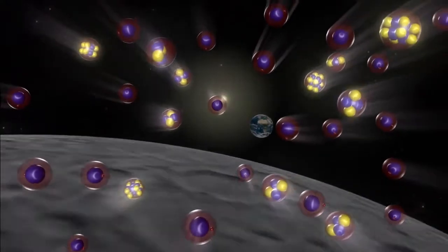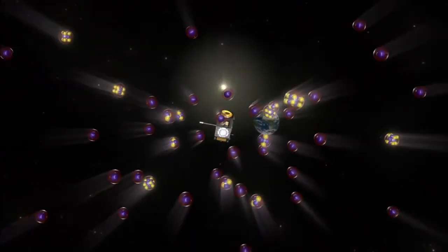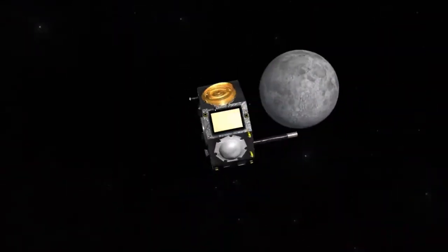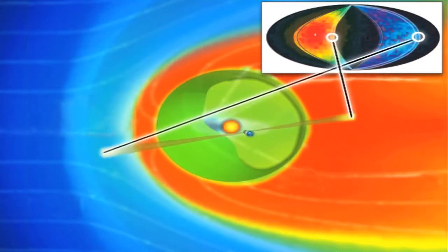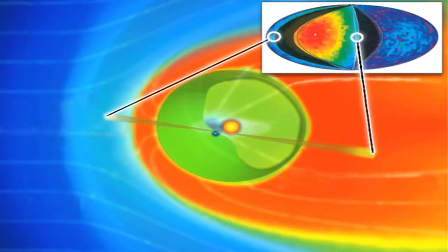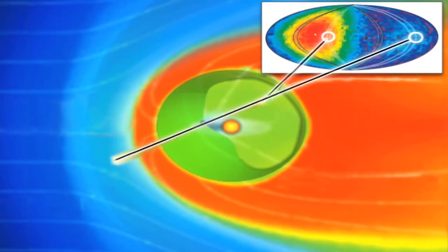IBEX is also different because it makes its images from particles instead of light. Over the course of six months and many orbits, IBEX can paint a picture of the entire sky in energetic neutral atoms, or ENAs for short.